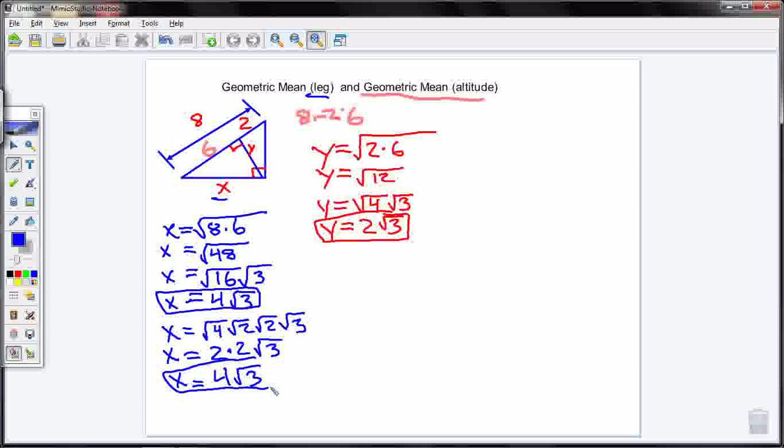And 2 times 2 is 4. So x equals 4 square root of 3. And I say that same number two slightly different ways. But I was able to get to it either way. So this is a sample problem of how to find a leg or an altitude using the geometric mean leg theorem and the geometric mean altitude theorem.